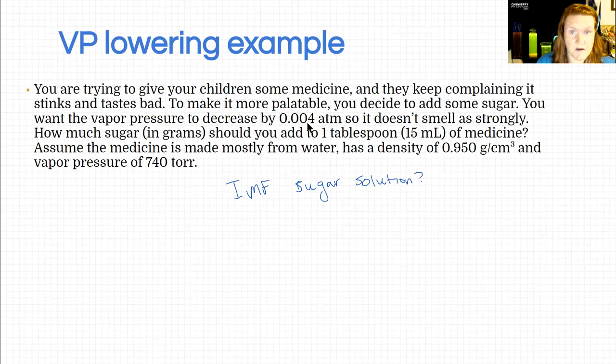Now it's important to notice that your units of pressure don't match here. So you have to convert something - it's your choice which one - but atmospheres and torr are two different things, right? And so we want our pressure to go down by 0.004 atmospheres, but we can't subtract that from 740 torr, so you're going to have to convert one of them, okay. So try this out and we'll see how it goes on Blackboard.